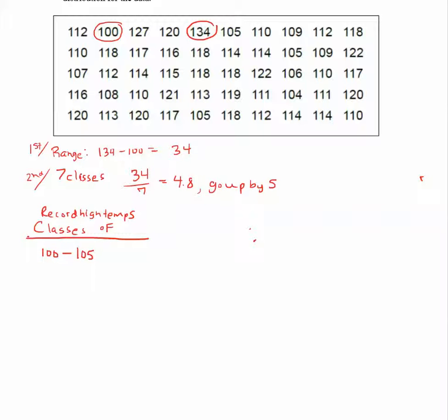Next I start at 106. So start at the next number. Add 5 to 106 and you get 111. My next class is going to start at 112. Add 5 you get 117. Then we have 118, and 118 plus 5 gives us 123. Then we have 124 plus 5 is 129. 130 to 135.